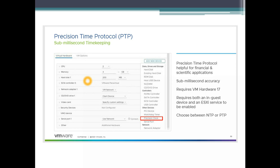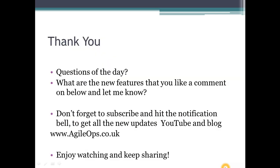Precision Time Protocol is really useful for financial and scientific applications requiring sub-millisecond accuracy. It requires VM Hardware Version 17, and both the in-guest device and the ESX service need to be enabled. You can choose between NTP or PTP, which is the Precision Time Protocol. That's the main enhancement in Hardware Version 17.